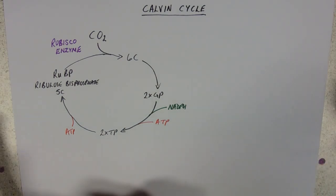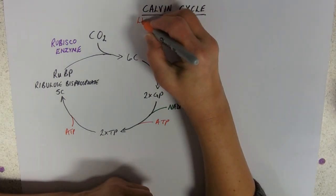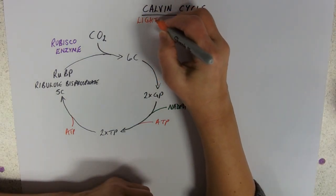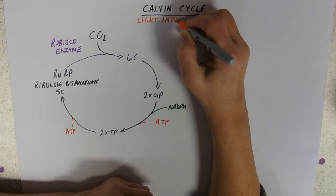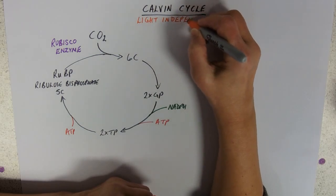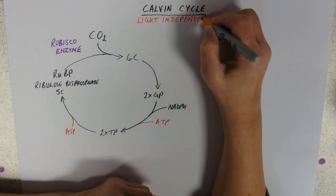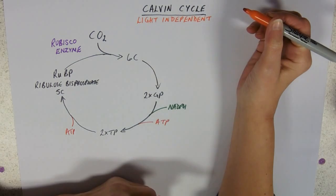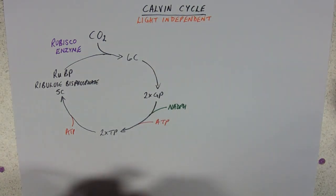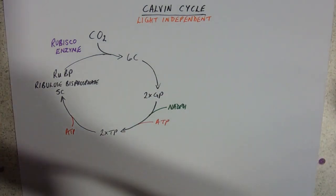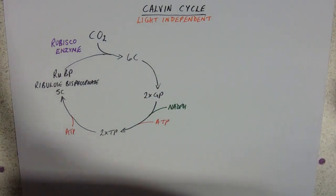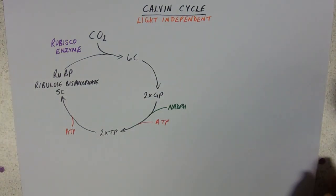So this is a Calvin Cycle. These are otherwise known as the light independent reactions, which means that they don't need light to happen. However, I do need to warn you they won't happen unless the light dependent reactions are going on.